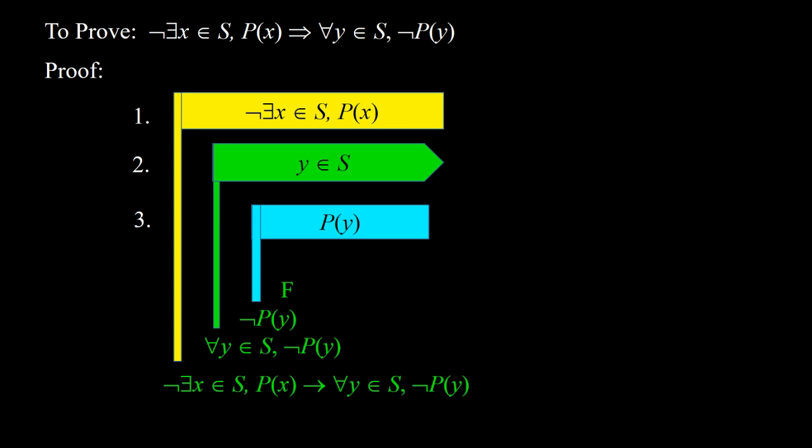So how do we get false? We have not in 1. So if we can get for some x element of s, px, then we can get false. And yes, we have it because we have y element of s in 2 and py in 3, so we can apply the introduction of the existential quantifier to 2 and 3. So we have for some x element of s, px — we indicate this with 4. Now we get false by applying the inverse to 1 and 4, and we indicate this with 5.